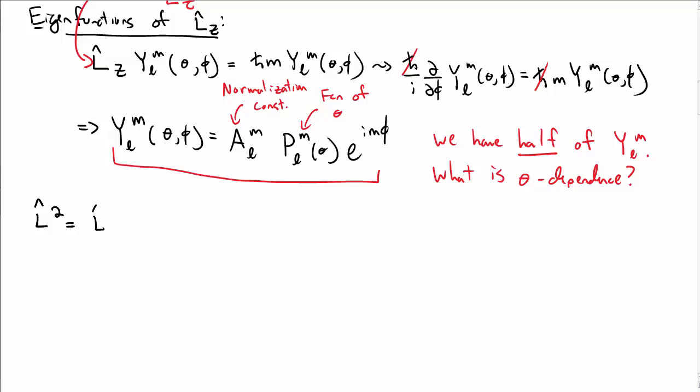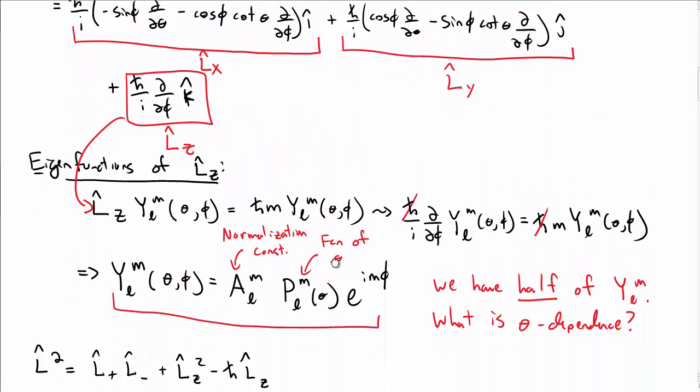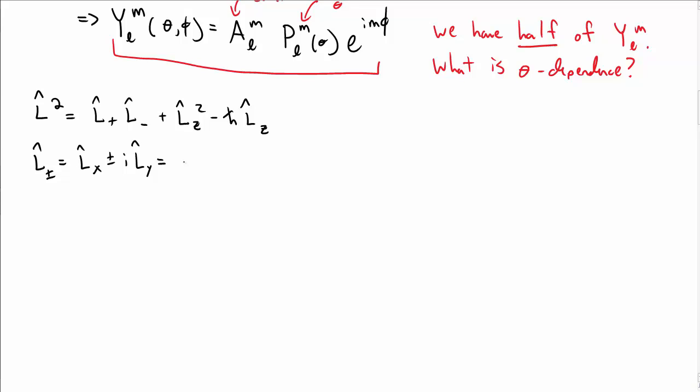So recall L squared is, well, one way of writing it is L plus L minus plus L_z squared minus h bar L_z. And if you remember, L plus or minus is L_x plus or minus i L_y. But I have L_x and L_y up here. And so I can just do this algebra, and I'm just going to quote a result. After a bit of algebra, we get plus or minus h bar e to the i phi d by d phi plus or minus i cotangent of theta d by d theta. Yes, that's e to the i phi, not e to the i m phi. We don't know anything about the solutions yet, okay?